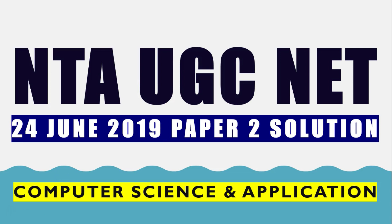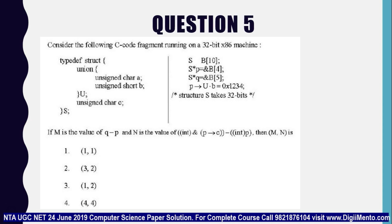Now let us look at question number 5 in NTA UGCnet 2019. Every year they ask one question from C programming, which is a very interesting question. Last year they asked a good question based on union, and this year also this question is very interesting — if you have very good knowledge of C programming, only then will you be able to give the correct answer.